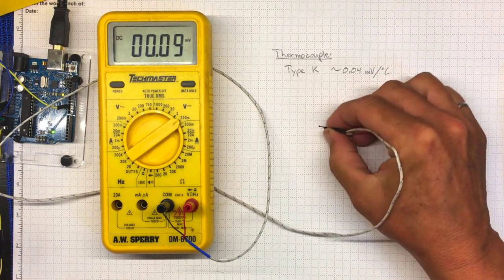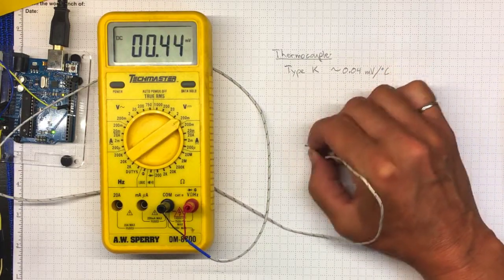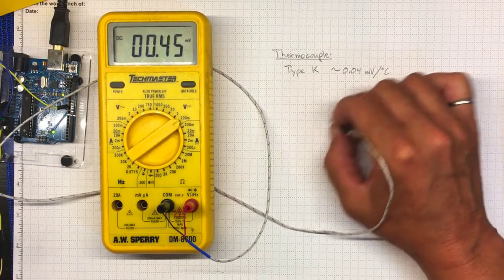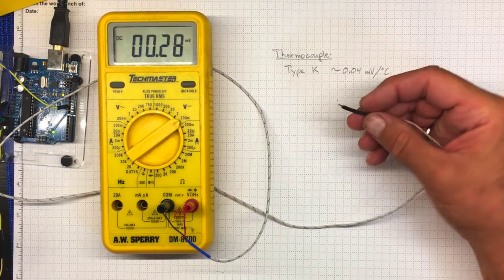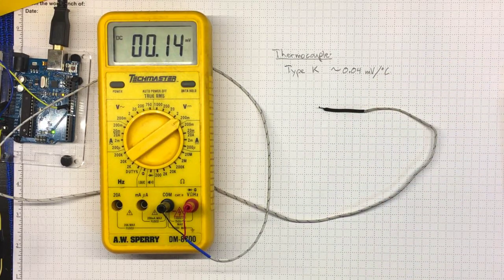Now if you want to try something more you can rub the end on a piece of paper friction produces heat so that thermocouple is now about ten degrees warmer than the surrounding air but it's coming back down towards room temperature pretty quickly.